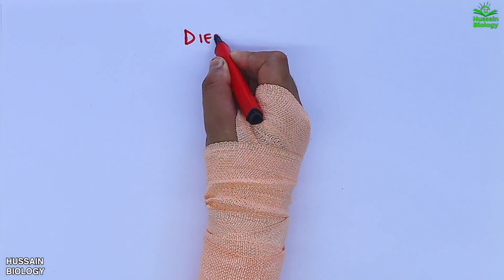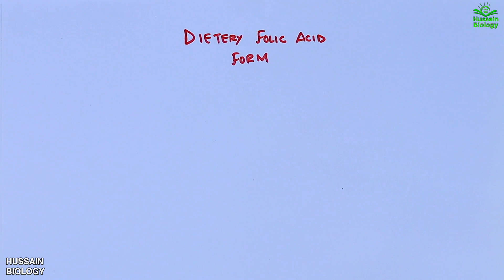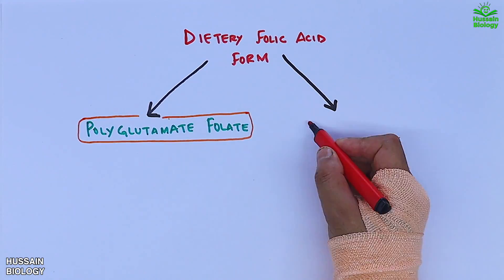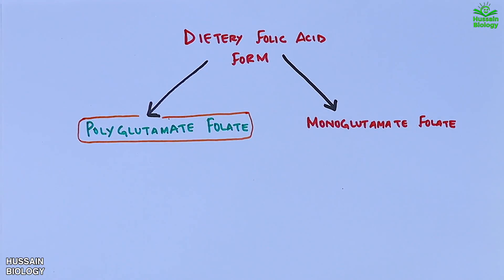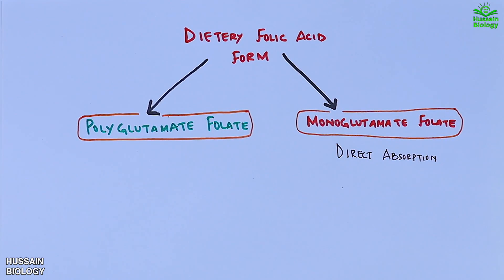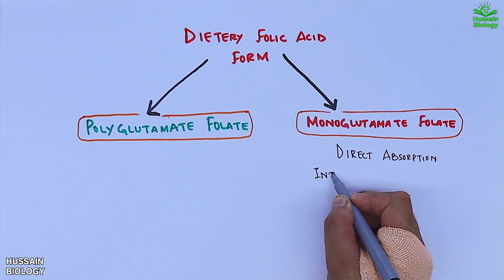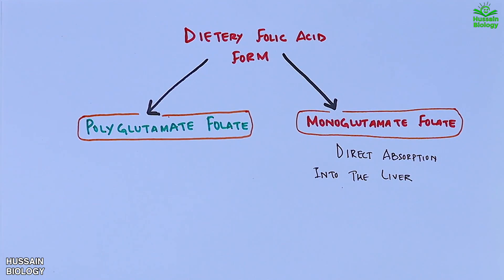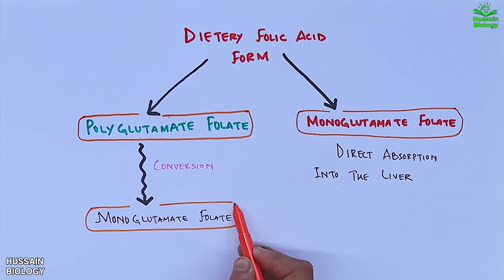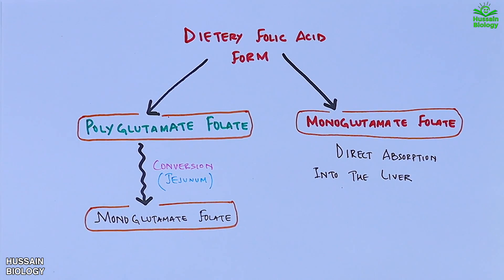Moving towards the dietary folic acid forms: the food we consume has two important forms of folic acid. One is the polyglutamate folate and the second is the monoglutamate folate. The monoglutamate folate shows direct absorption — it is directly absorbed by the small intestine and then gets into the liver. Whereas the polyglutamate form is first converted into monoglutamate form in the duodenum, and then this monoglutamate is absorbed and finally reaches the liver.